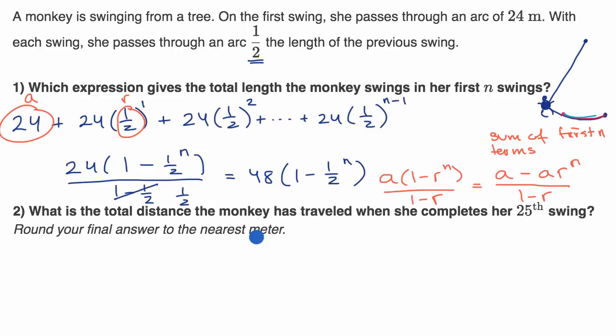All right, well we can just use this expression here, and we know that we are completing our 25th swing. So N is 25, and so we'll just put a 25 there. So that's going to be 48 times one minus one half to the 25th power.